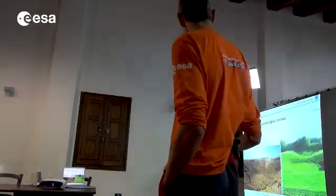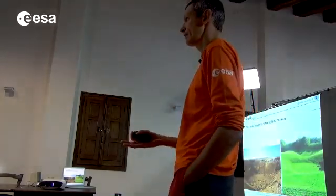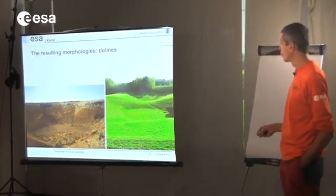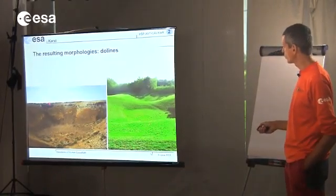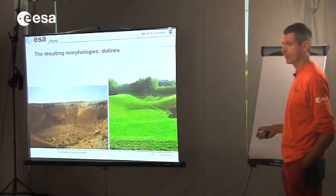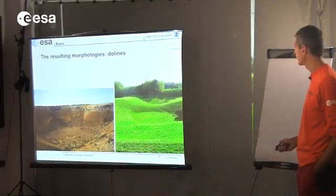All the water goes underground, meaning there are no valleys. So the Slovenian people don't have valleys — they have dolinas, which are these closed depressions, and that's their valleys. That's the typical way water goes underground: it rains, the water on the slopes goes down to the bottom of this closed depression and goes underground. That's typical of karst areas.